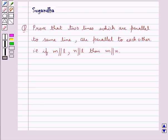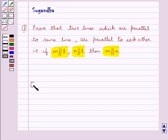are parallel to each other. That is, if M parallel to L, N parallel to L, then M parallel to N. Before moving on to the solution, let's recall Euclid's fifth postulate.